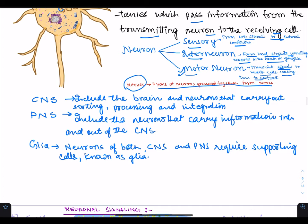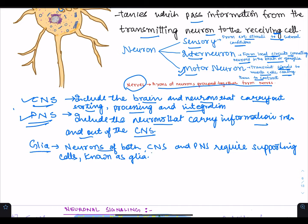The nervous system can be a central nervous system or a peripheral nervous system. The central nervous system includes the brain and neurons that carry out sorting, processing, and integration, while the peripheral nervous system includes the neurons that carry information into and out of the central nervous system. Glia are supporting cells required by neurons of both the central and peripheral nervous systems.